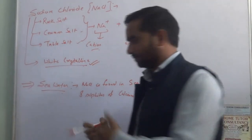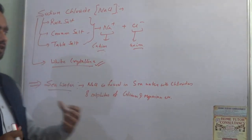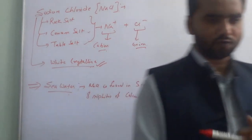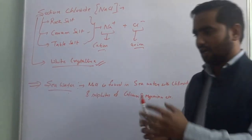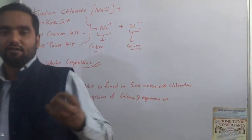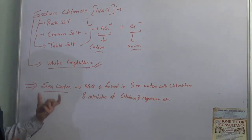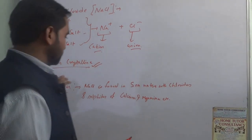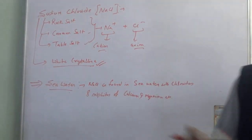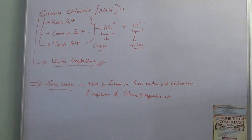The process by which we get NaCl from seawater is called evaporation. They store water somewhere and as time passes, the water H2O molecules evaporate and the salt remains. This is the process by which common salt can be extracted from seawater.